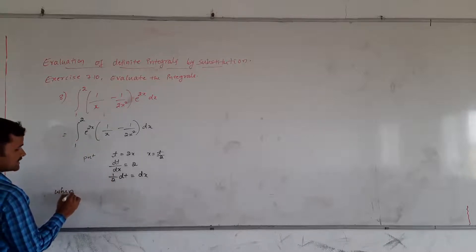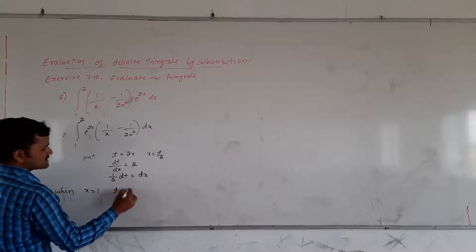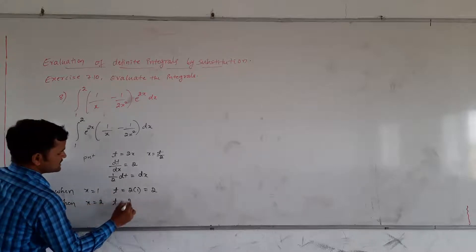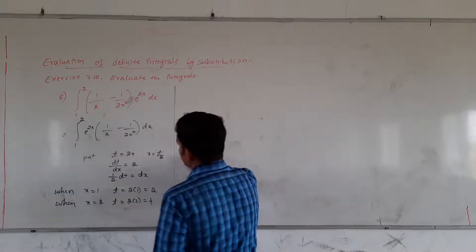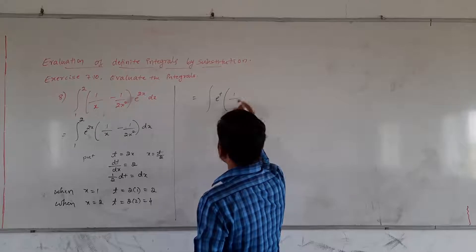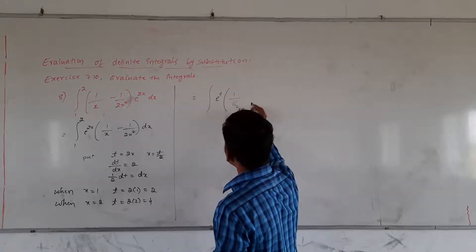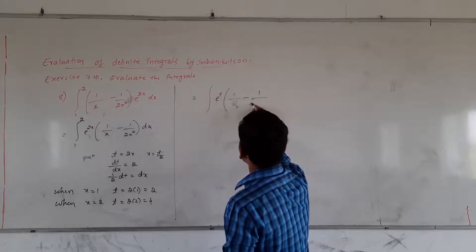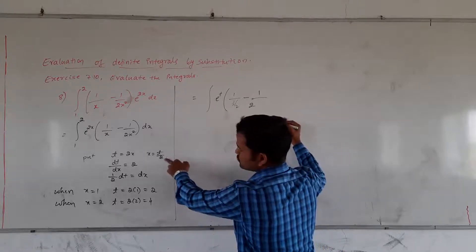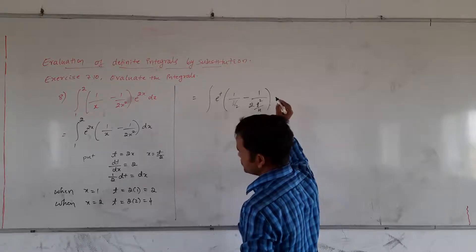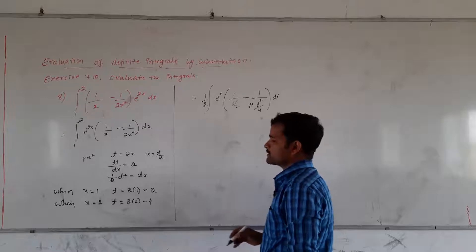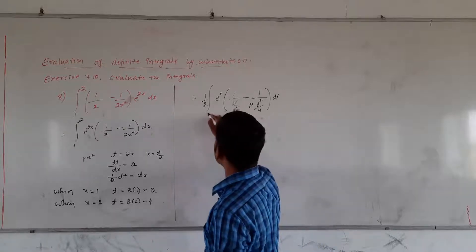What about the upper limits and lower limits? When x is equal to 1, t is equal to 2 × 1, that is 2. When x is equal to 2, t is equal to 2 × 2, that is 4. So the integral from 1 to 2 becomes 2 to 4. We have the integral of e raised to t, and 1/x is t/2, which is nothing but 2/t.